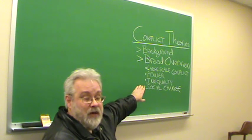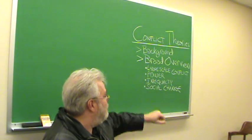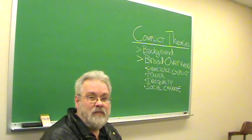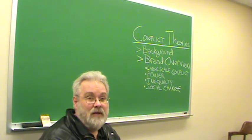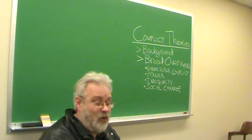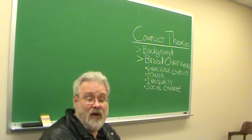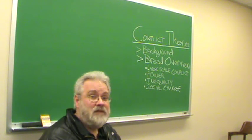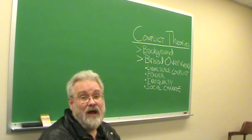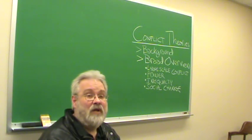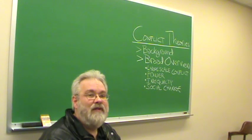Which leads to our next point, a huge emphasis by conflict theorists on all forms of social inequality, gender inequality, race, racial or ethnic inequality, class inequality. A lot of times conflict theorists place a great emphasis on economic forms of inequality, inequality of wealth, income, and so forth. But it doesn't end there.